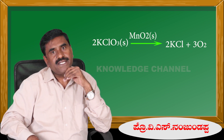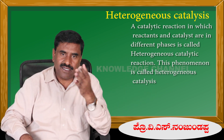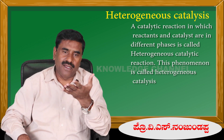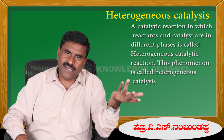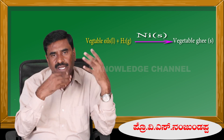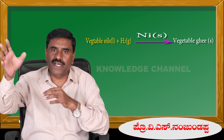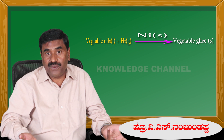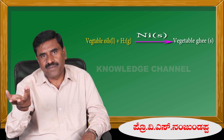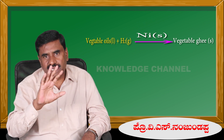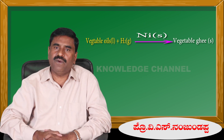Now let us look at heterogeneous catalysis. In heterogeneous catalysis, the catalyst and reactants are in different physical states. For example, in the conversion of oils into fats — hydrogenation — the oils are in liquid state, hydrogen gas is in gas state, and the catalyst nickel is in solid state. Since the catalyst and reactants are not in the same physical state, this is an example of heterogeneous catalysis.